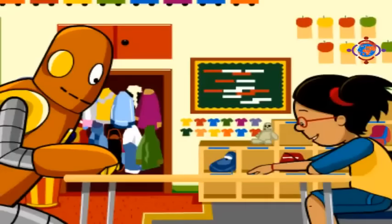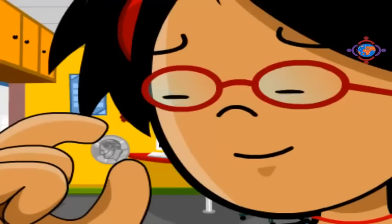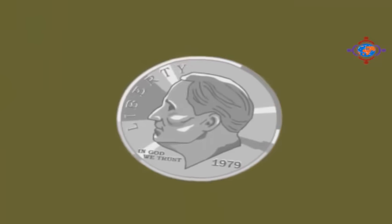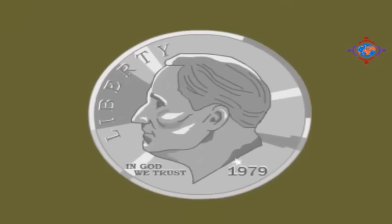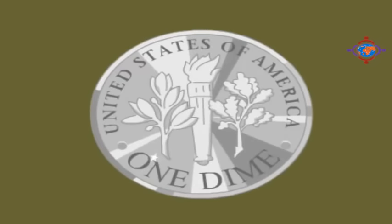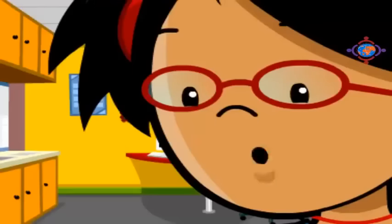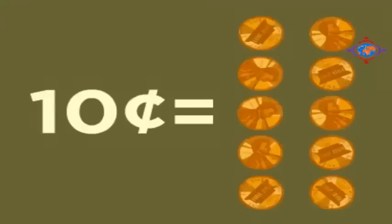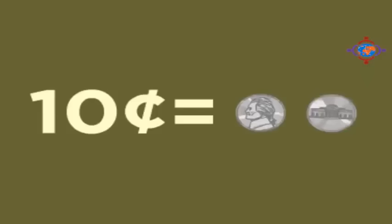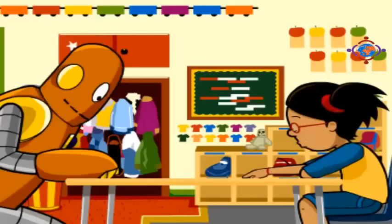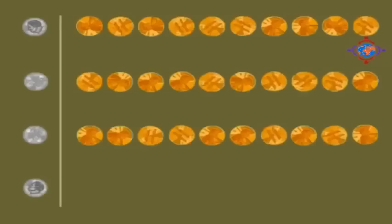We still have other coins to count. A dime looks like this, with Franklin Roosevelt on its head and a torch on its tail. A dime is worth ten cents. There are a lot of ways to make ten cents — I could use ten pennies, two nickels, or just one dime. We can count by tens: we have four dimes, so that's ten, twenty, thirty, forty cents.